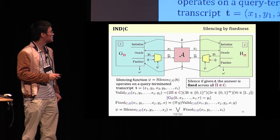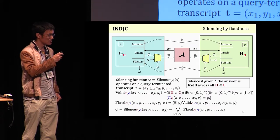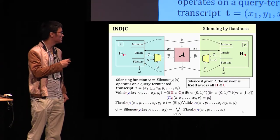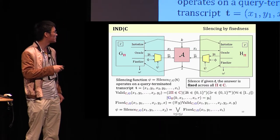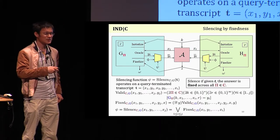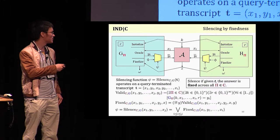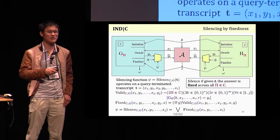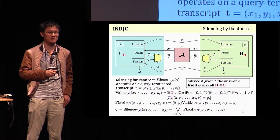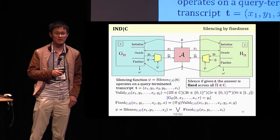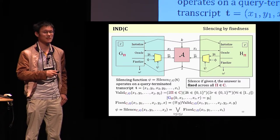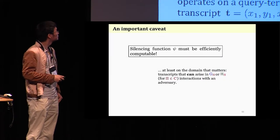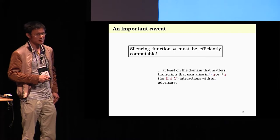We give definition formulas for the silencing functions. I don't want to go deep into this, but only want to point that the silencing function here is a logical or of a fixedness predicate. That means whenever there were prior queries that need to be silenced, it remains so. So it's like a silence then shut down approach. This concludes the description of INDIC.